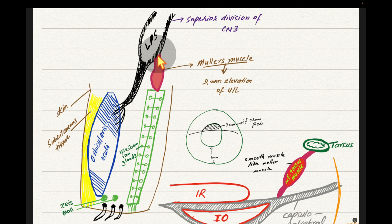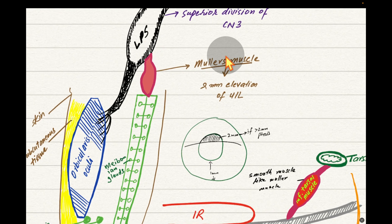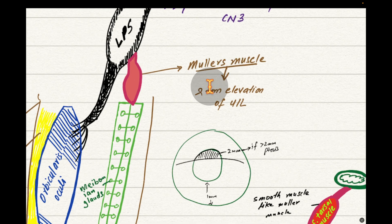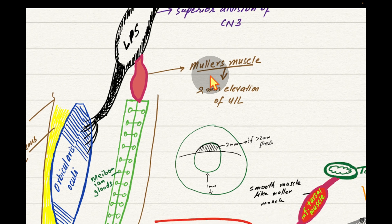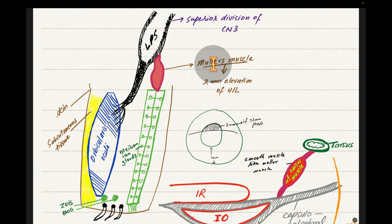Müller's muscle arises from the body of the levator palpebrae superioris and attaches to the tarsal plate. It provides 2 mm of upper lid elevation and is supplied by the sympathetic nervous system. If the sympathetic nervous system is compromised, Müller's muscle function is lost and a slight ptosis results — as seen in Horner's syndrome.